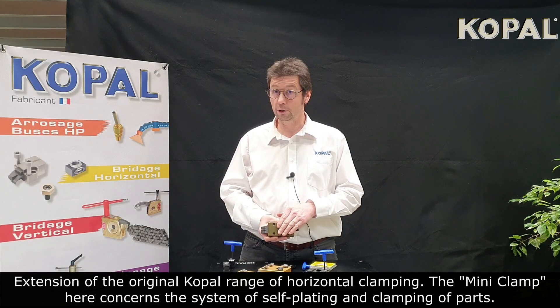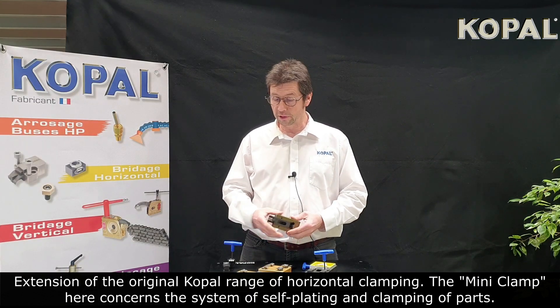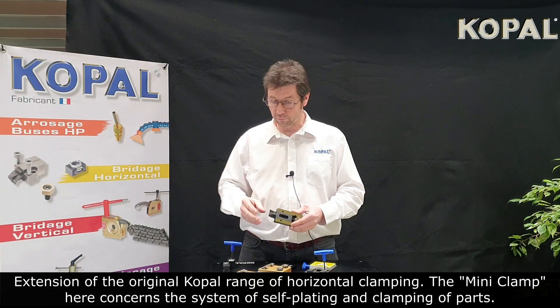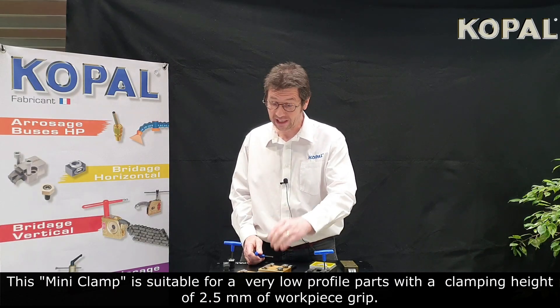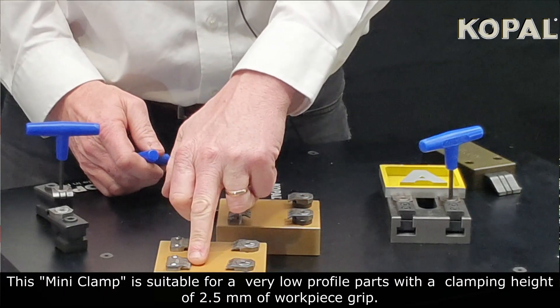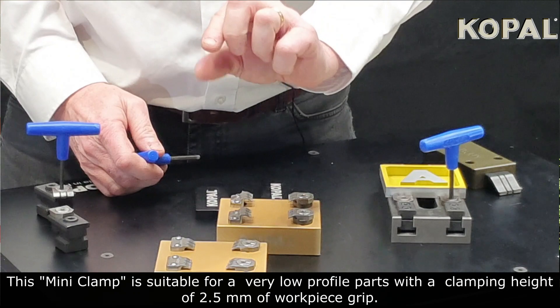Extension of the original KOPAL range of horizontal clamping, the Mini Clamp concerns the system of self-plating and clamping of parts. The Mini Clamp is suitable for very low profile parts with a clamping height of 2.5 millimeters.